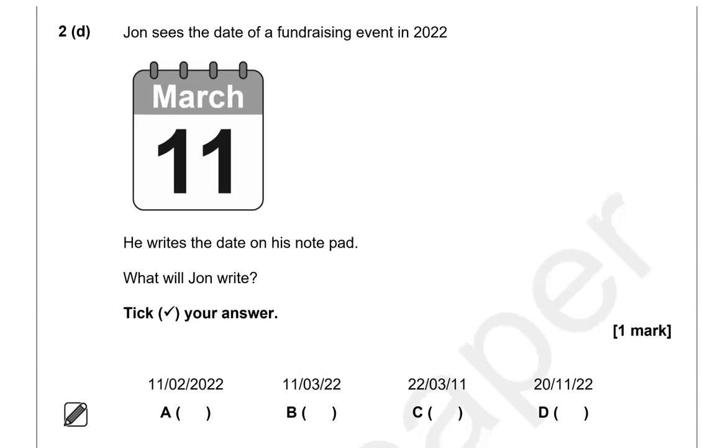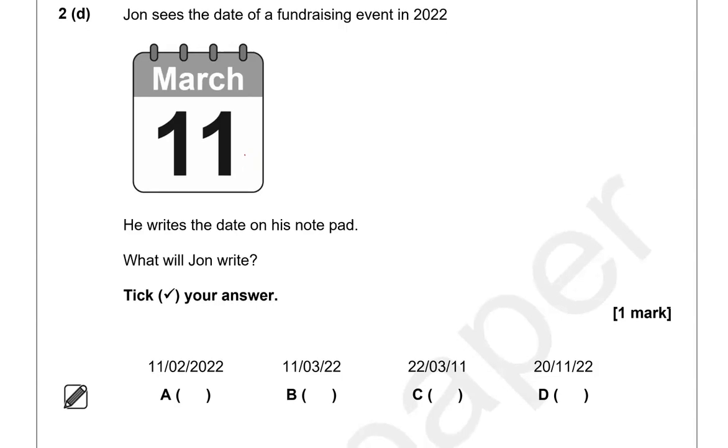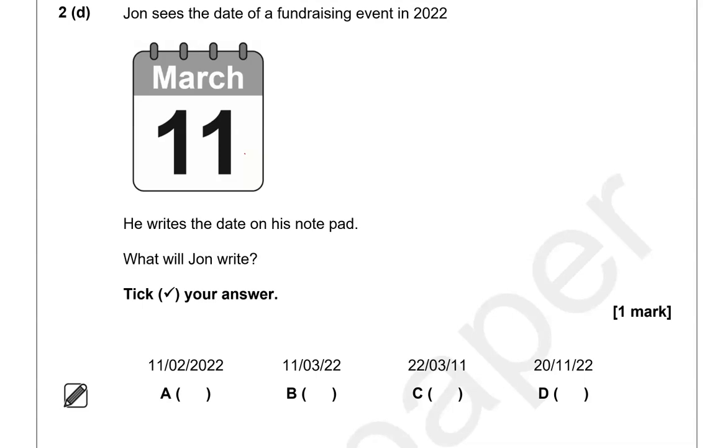John sees the date of a fundraising event in 2022. He writes the date on his notepad. What will John write? Tick your answer. So 11th of March. March is the third month. So we've got January, February and then March. So it's the third one. So 11th of the 3rd, 2022. First one is not correct because that's 11th of the 2nd. This one is 11th of the 3rd, 22. That's option B and it's the correct one.